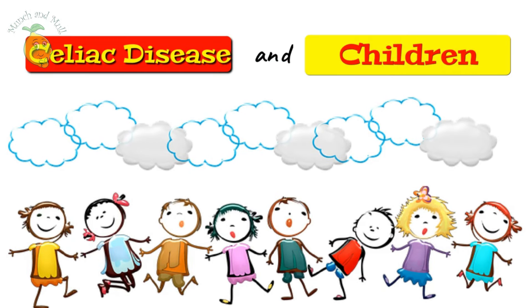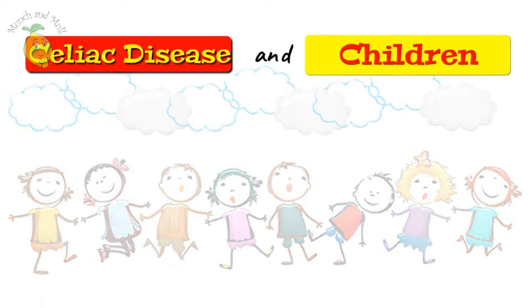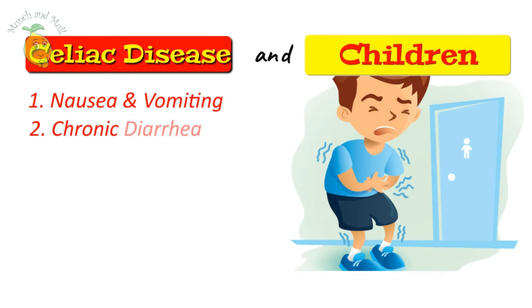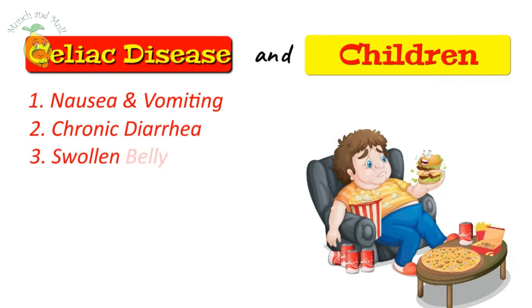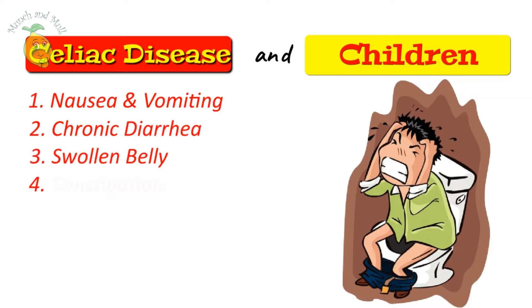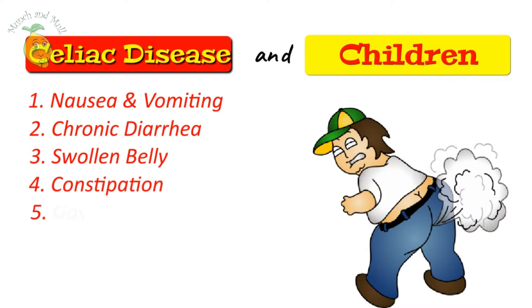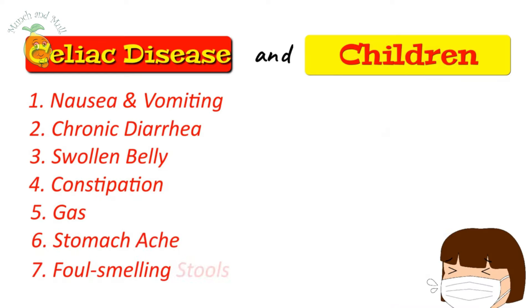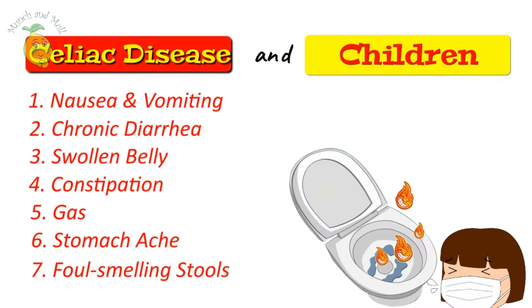Children with celiac disease have symptoms like nausea and vomiting, chronic diarrhoea, swollen belly, constipation, gas, and pale and foul smelling stools.